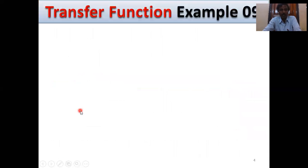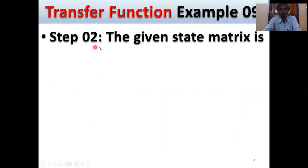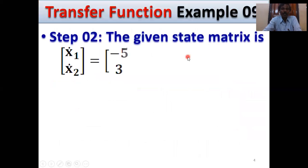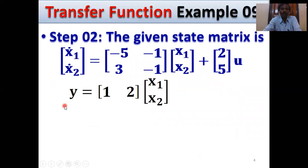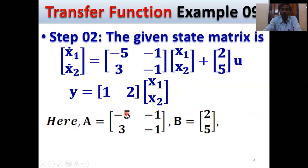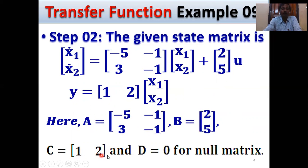This is the basic idea of transfer function. The given state matrix is: x1-dot, x2-dot = A matrix · X matrix + B matrix · u(t), and y = C · [x1; x2]. Here A = [-5, -1; 3, -1], B = [2; 5], C = [1, 2], and D = 0 (null matrix). Given A, B, C — calculate transfer function.